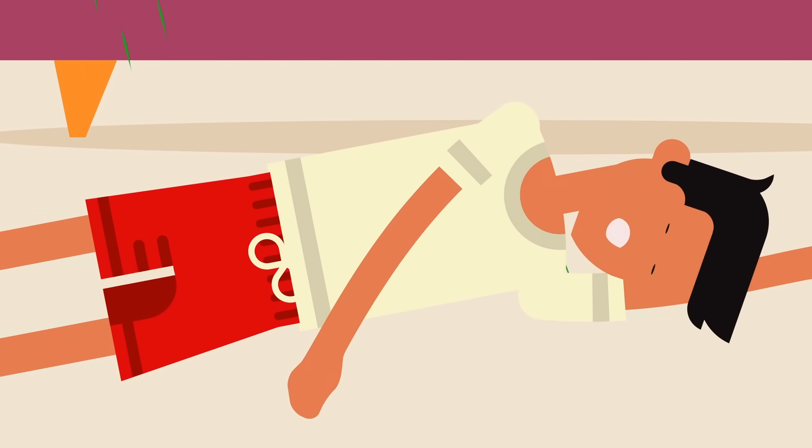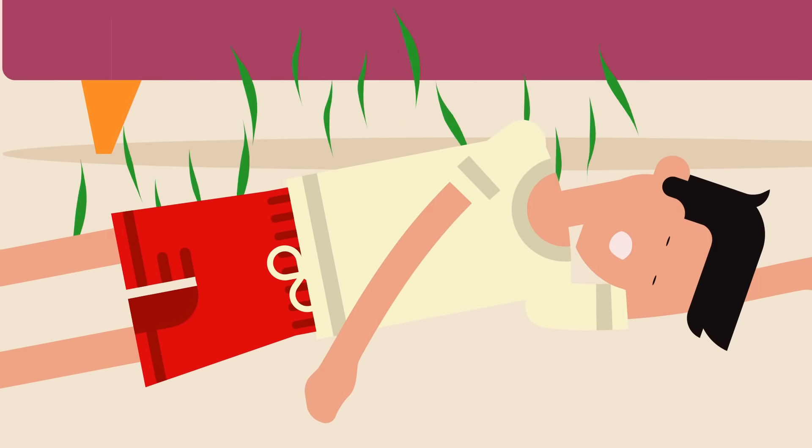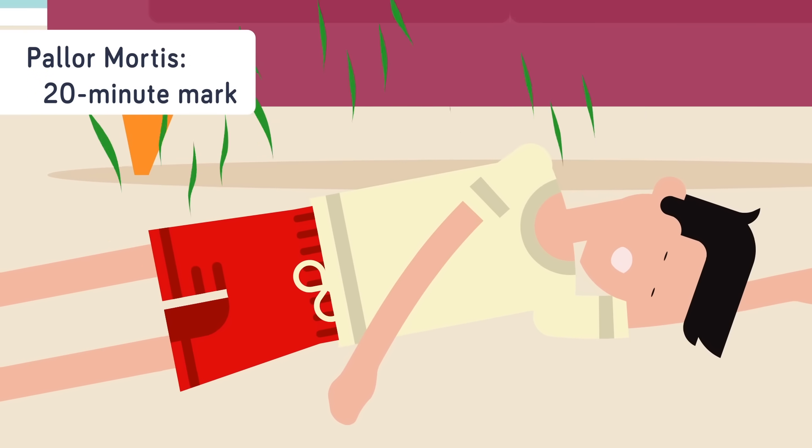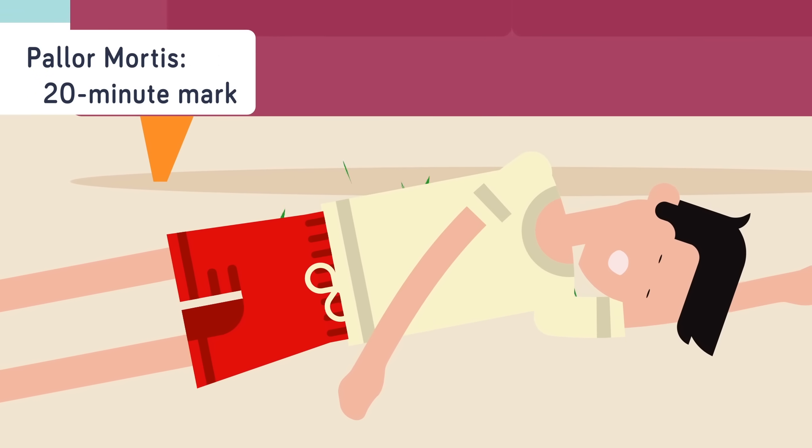Jack then started to turn a shade of white, which is something in the death business they call pallor mortis. It's the process of the blood draining from the veins. This usually happens at around the 20 minute mark.